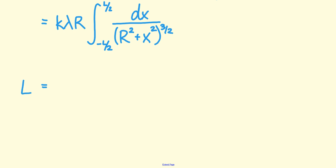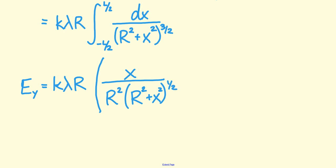If I follow that general form of this integral, I find my electric field, and then the integral ends up being x divided by R squared times R squared plus x squared to the 1 half. Let me evaluate that between negative L over 2 and positive L over 2.